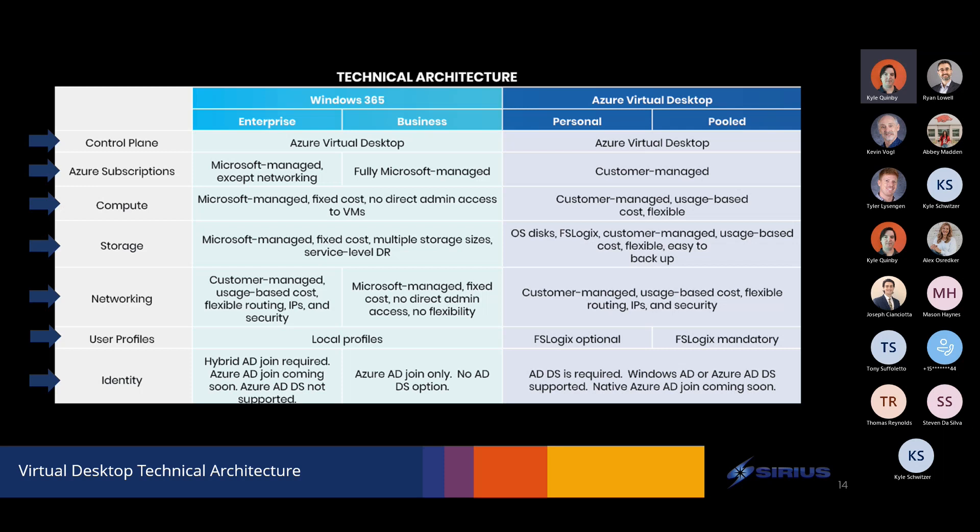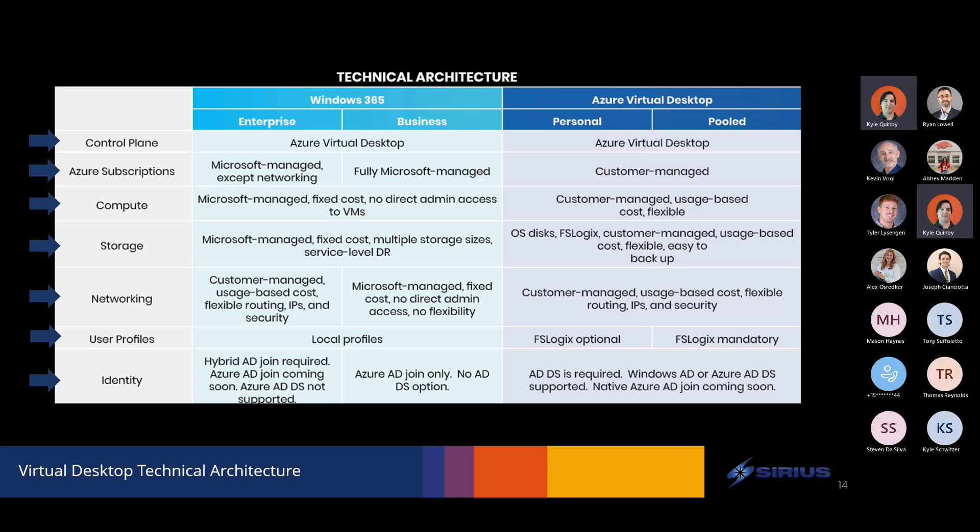Ryan had mentioned the networking differences. In order to take the enterprise version of Windows 365 and domain join it, you do have to have an Azure presence already. What it's doing is extending the virtual NIC from the Windows 365 PC into an Azure VNet. You do need some sort of Azure presence, but you don't have to manage any of the desktops — Microsoft takes care of all of that for you. For identity, the business model of Windows 365 supports Azure AD join only, since there's no network connectivity back to on-prem and no Active Directory connection.